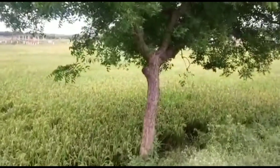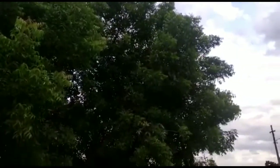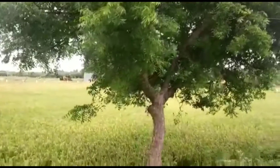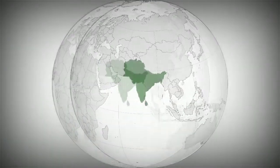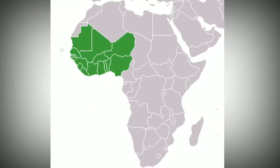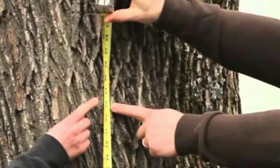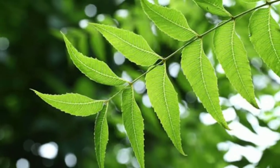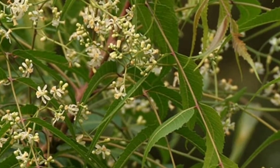Neem, Azadirachta Indica, is one of the important multipurpose tree species. Being an important part of our biological heritage, it is recognized as one of nature's gifts to mankind. It belongs to family Meliaceae, widely grown in South Asia, Southeast Asia, and West Africa. Azadirachta Indica is an evergreen tree of 10-15 meters in height with pinnate leaves up to 3-10 cm long. Flowering occurs during April and May, which is related to high temperature and low rainfall.